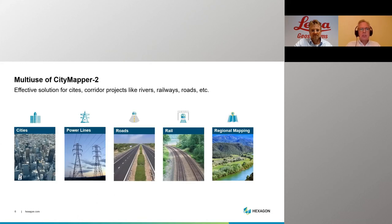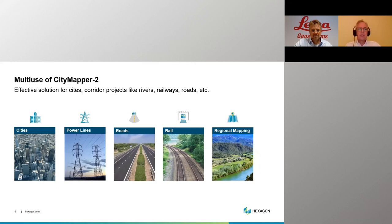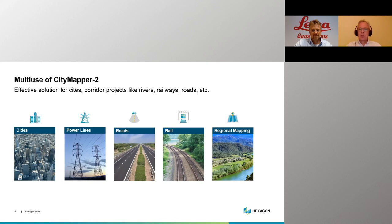This flexibility allows us to use CityMapper 2 in a greater variety of applications, including typical city profiling and city modeling — the bread and butter of oblique imaging systems — but also linear projects like power lines, roads, or railways, and even traditional regional mapping projects as you might do with a typical LiDAR system. So it's really a multi-use system.